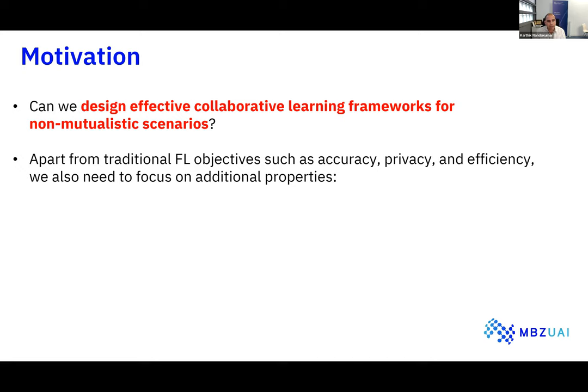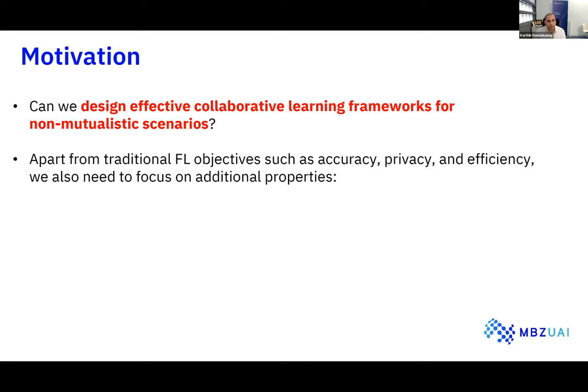Apart from the traditional federated learning objectives — accuracy (collaborating gives a better model than not collaborating), privacy (not leaking information about private data during collaboration), and efficiency (both communication and computational) — we need additional properties for non-mutualistic scenarios. These traditional objectives are well-studied in the federated learning literature.